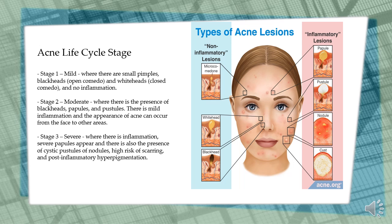The first is mild, where there are small painless blackheads (open comedones) and whiteheads (closed comedones) and no inflammation. The second stage is moderate, where there is the presence of blackheads, papules, and pustules. There is mild inflammation, and the appearance of acne can spread from the face to other areas.